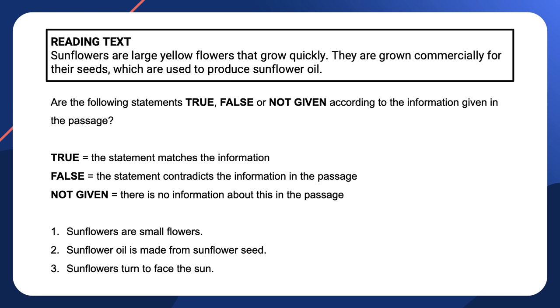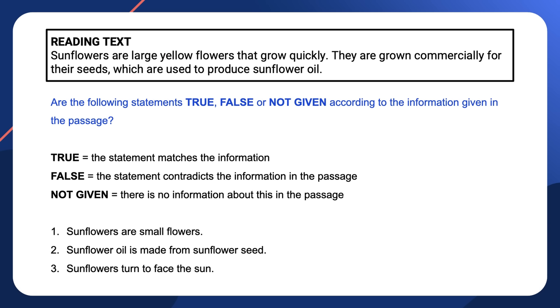Here's a simplified text with a true, false, not given question — real IELTS reading passages are a lot more detailed than this, but let's talk through the most important parts. Before answering, let's read the instructions: are the following statements true, false, or not given, according to the information given in the passage? A statement is true if it matches the passage, false if it contradicts the passage, and not given if there is no information or only incomplete information about the statement in the passage.